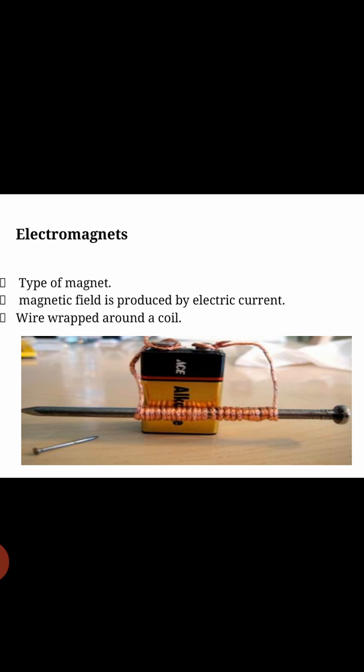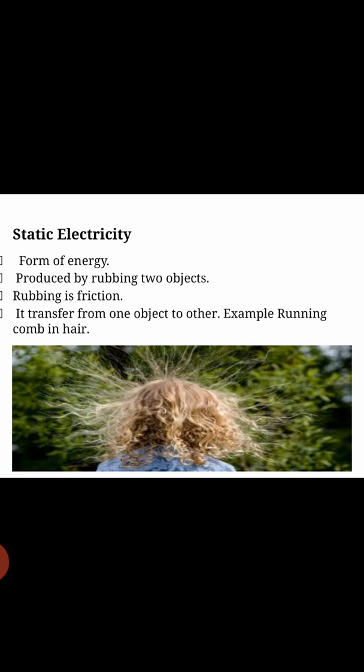Static electricity is also a form of energy. It is produced by rubbing two objects together. For example, if you rub your two hands together, there will be heat in your palms — that is how electricity is produced. Rubbing is friction. You can see in the diagram the hair of the girl standing erect.